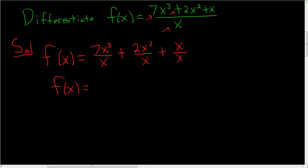Now here we have x squared, here we have x. So we have one copy of x here and three copies here. That leaves us with two copies, plus 2x, plus 1.